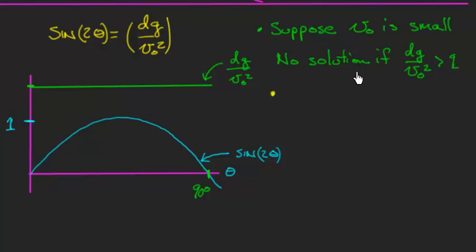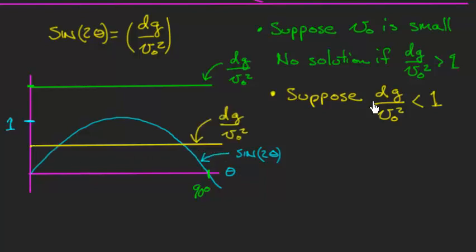So next, I want to consider the case where v0 is quite a bit bigger, so this quantity dg over v0 squared is less than 1. In this case, the right-hand side of my equation would be somewhere down here. And now, notice the left-hand side of the equation, the blue curve, the sine 2 theta, is equal to the right-hand side of the equation, the dg over v0 squared, and I have equality at two specific values of theta, right there and right there.